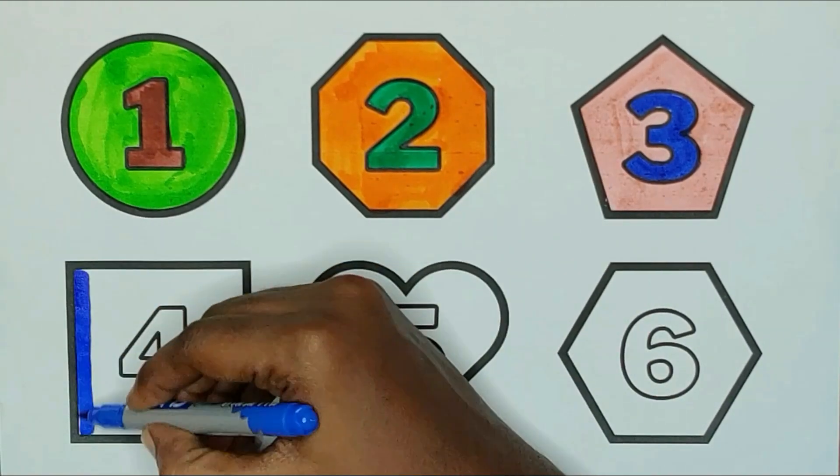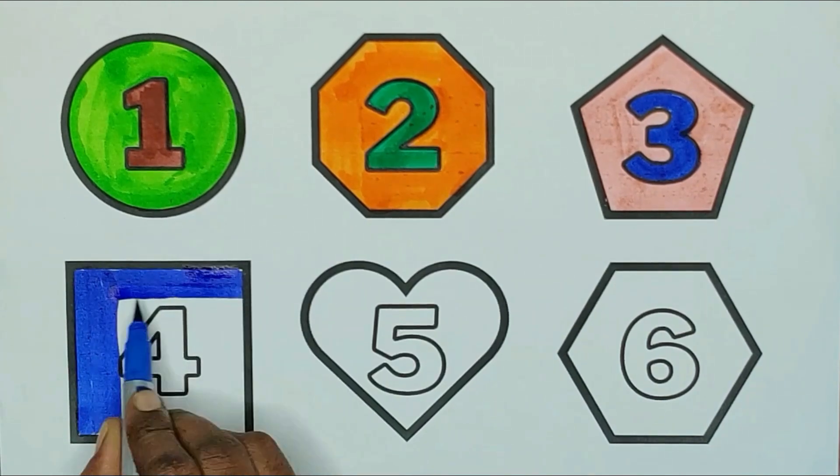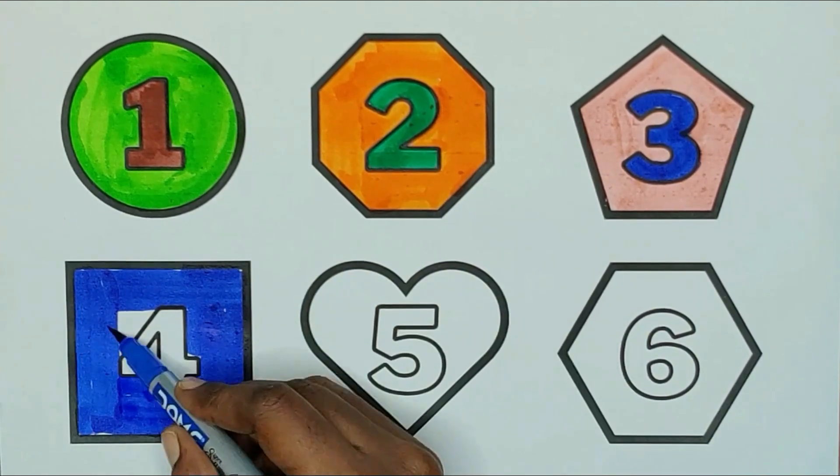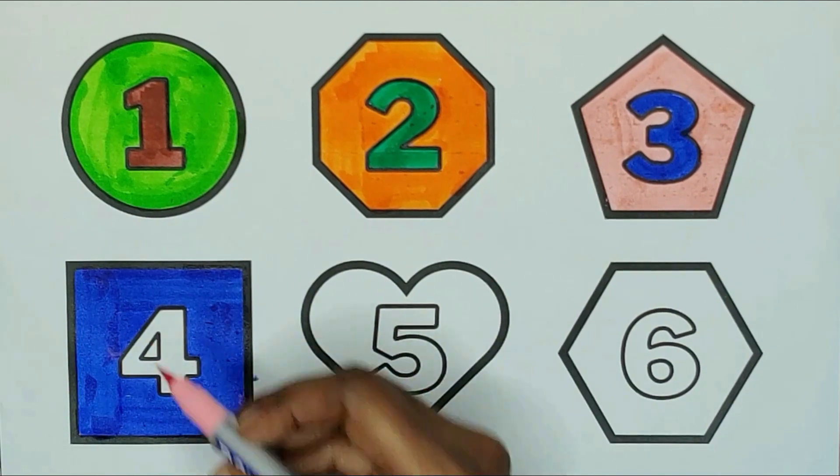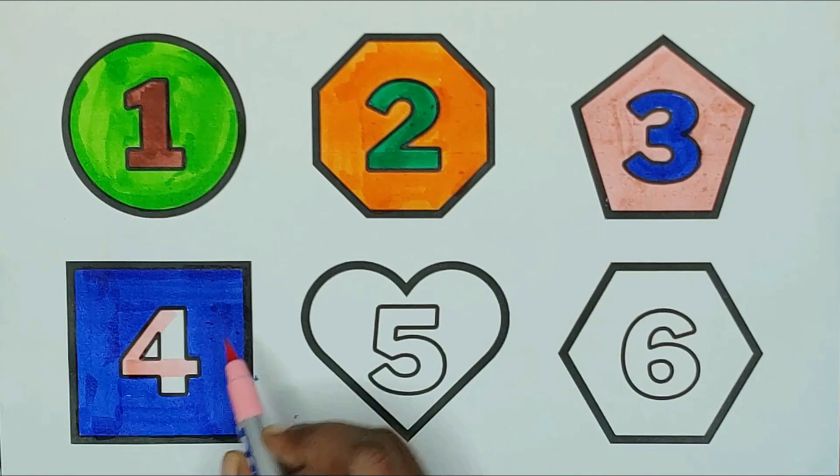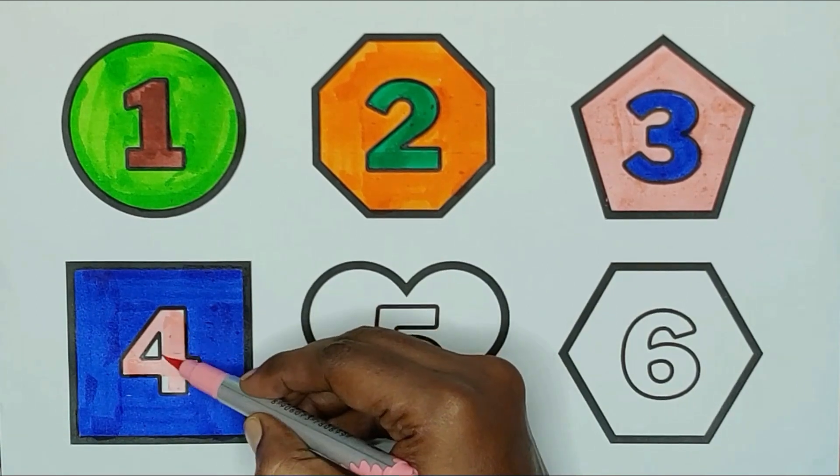Blue color square. The shape is square. Pink color, four. Blue color, four. F, O, U, R, four.